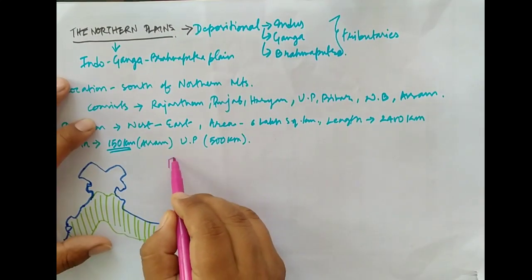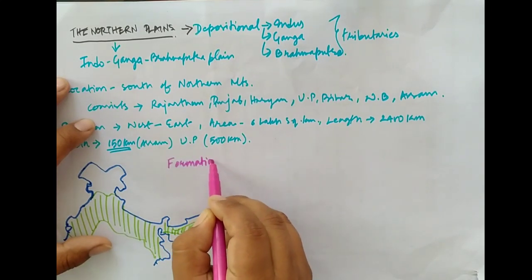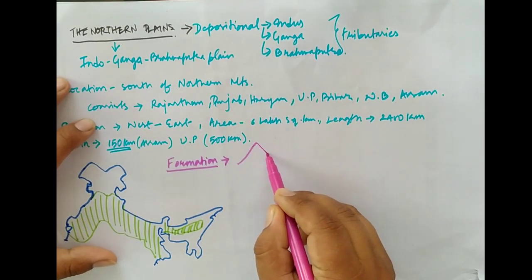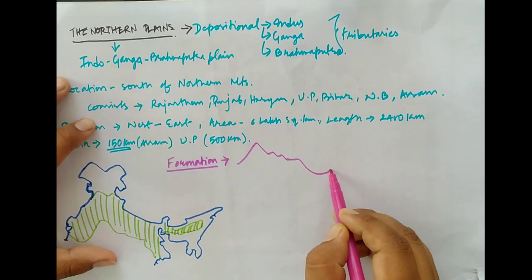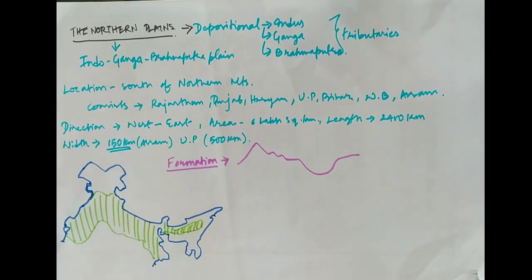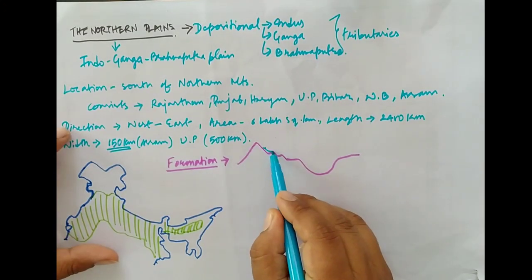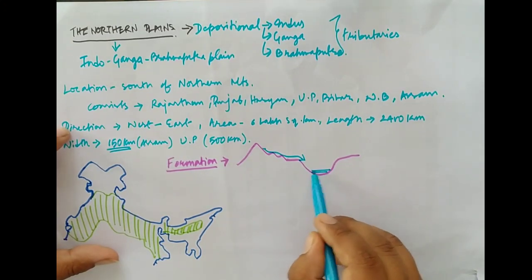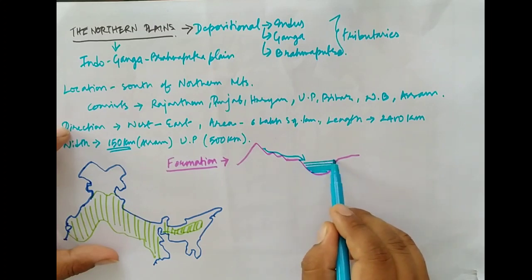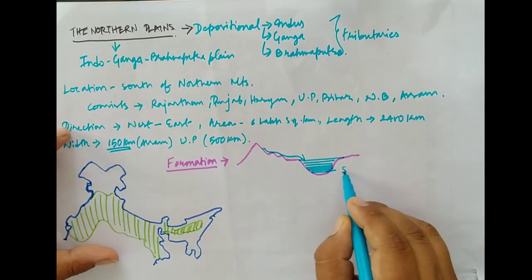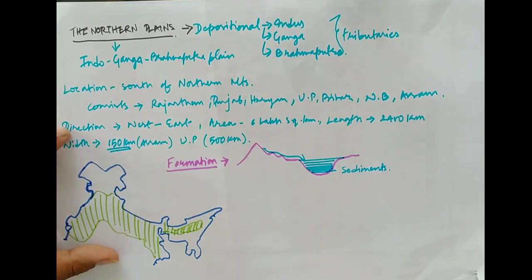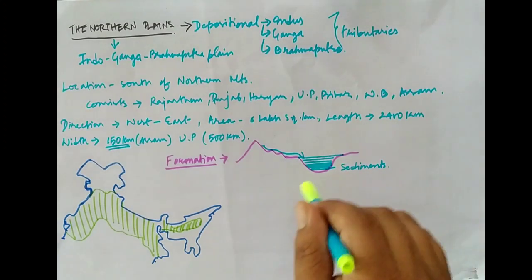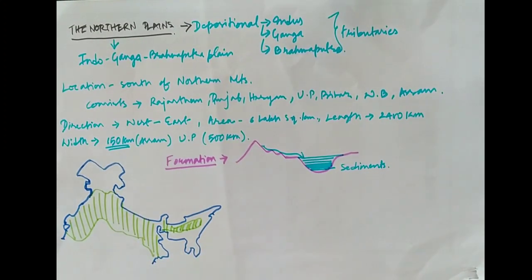Regarding the formation of northern plains, some geographers suggest that when the Himalayas were formed due to the collision of two tectonic plates, a geosyncline was formed. Over the years, rivers originating in the Himalayas drained into the geosyncline. Layer after layer, sediments were deposited. After millions of years of deposition, a flat land topography was formed, which is presently known as the northern plains.